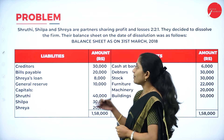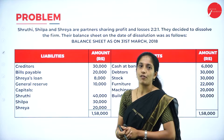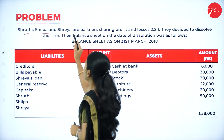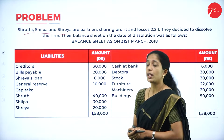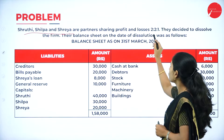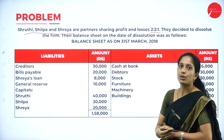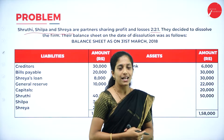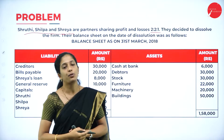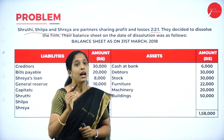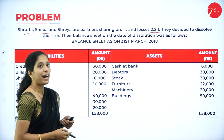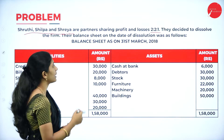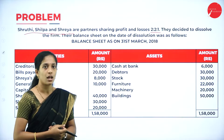Now we shall work on a problem relating to dissolution of a partnership firm. Shruti, Shilpa, and Shreya are partners sharing profit and loss in the ratio 2:2:1 — that is 2/5, 2/5, and 1/5. They decided to dissolve the firm and their balance sheet on the date of dissolution was as follows.